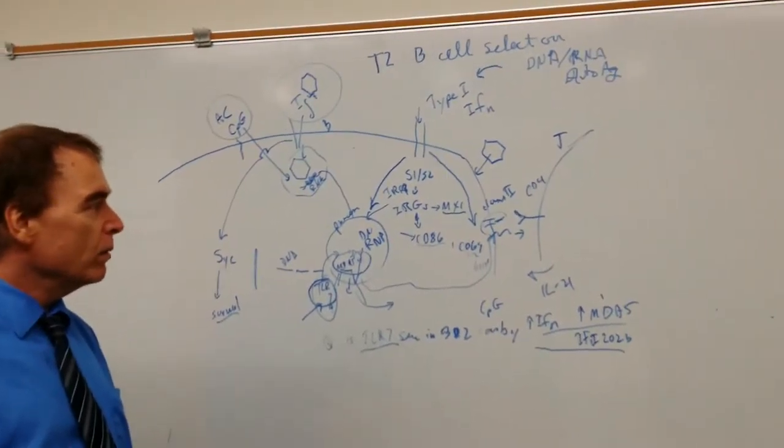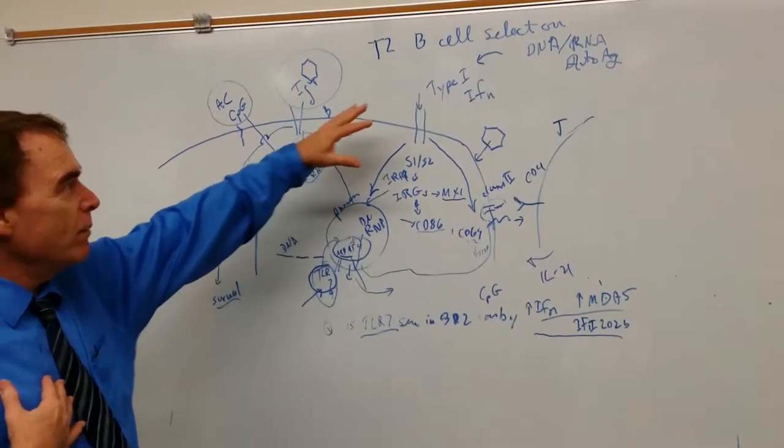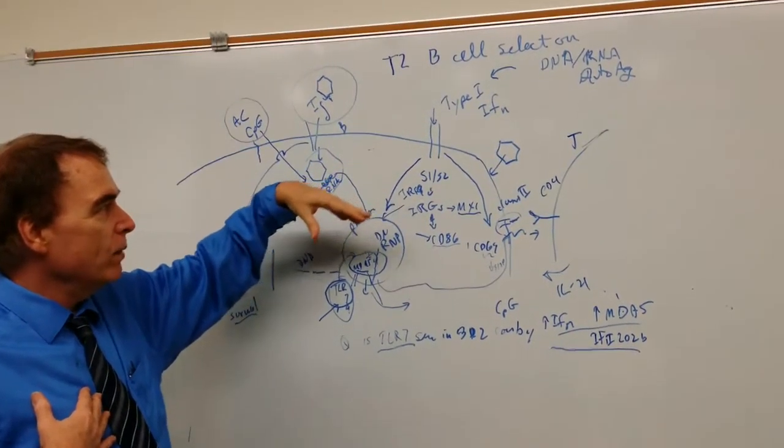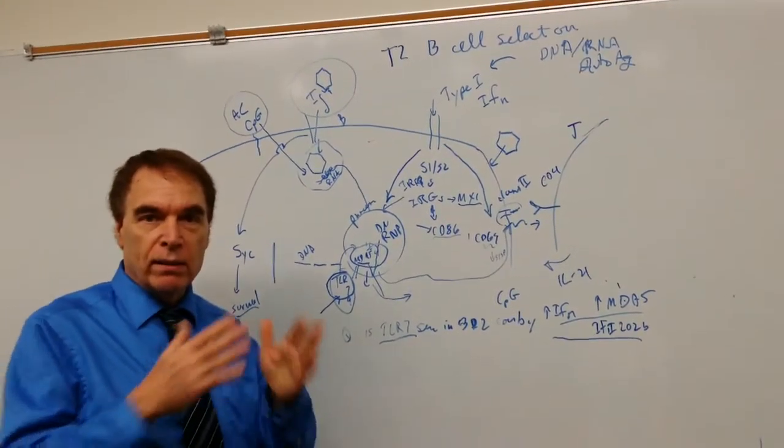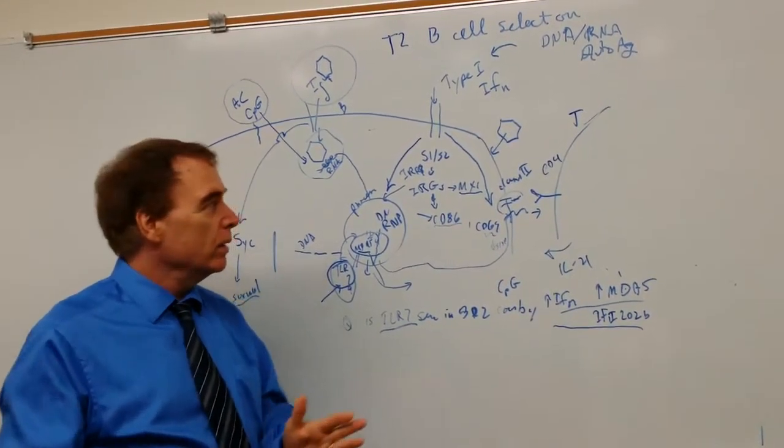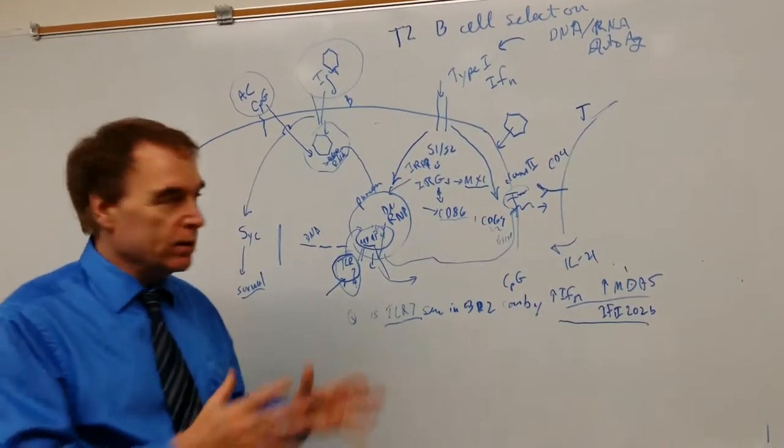What we have found is that type 1 interferon is critical to promote survival at the T2 checkpoint, the transitional stage 2, also called checkpoint 2. That's an early stage of development of B-cells.